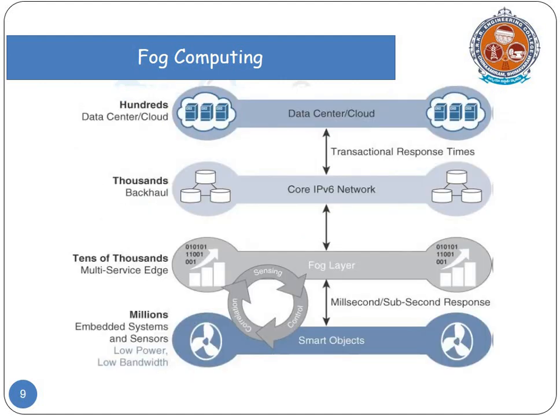As seen in this diagram, at the top there is a cloud layer, then a control IPv6 network layer, and there is a communication transaction response time. Smart objects are not directly connected to the IP network; fog nodes are created in between the network and the objects. To reduce latency when communicating between the cloud and the object, fog layers act as decentralized layers. The computation process is done within the fog layer itself, and the response is sent immediately to the object.